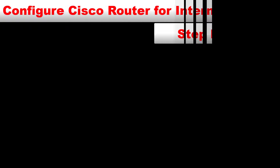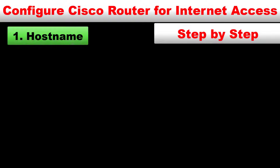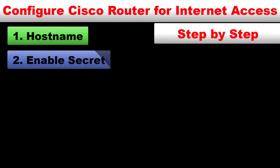The steps are very simple. In the first step, I will assign a hostname to my Cisco router and then configure an enable secret to stop access by unauthorized persons. You can skip these steps if you want.